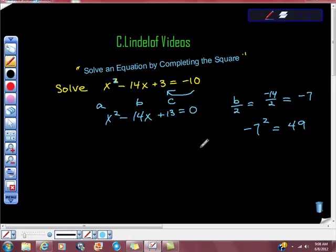Well, if I add 36. So this is what I'm going to do. I'm going to take x squared minus 14x plus 13, right? And I'm going to add 36 here is equal to 0, and I'm going to add 36 here.